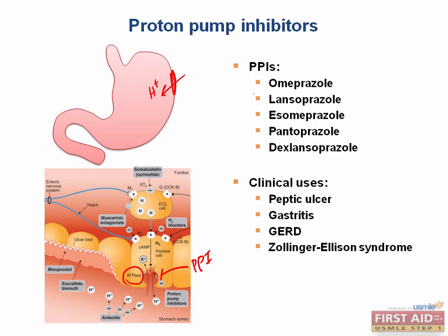Peptic ulcer treatment usually involves treatment with three drugs. This triple therapy includes a PPI, plus clarithromycin and amoxicillin. However, it can include metronidazole if the patient is penicillin allergic.